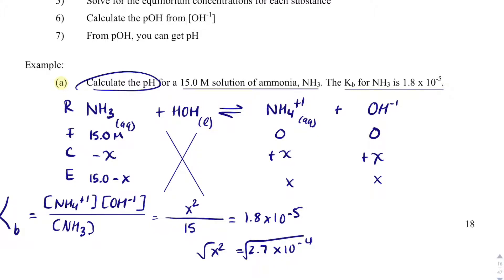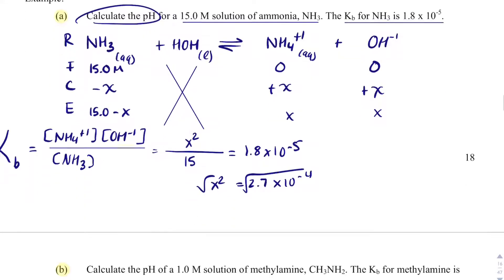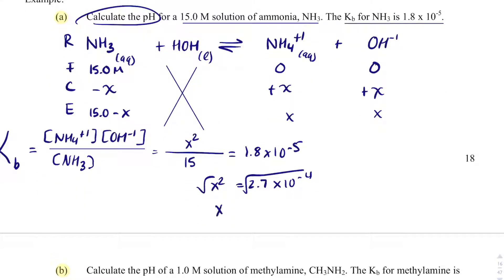Take the square root of each side. And what I end up with is I get X is equal to 1.6 times 10 to the minus 2.